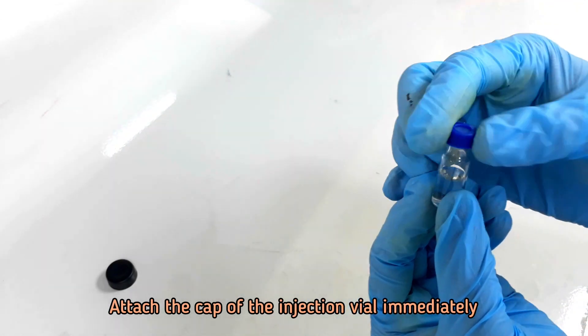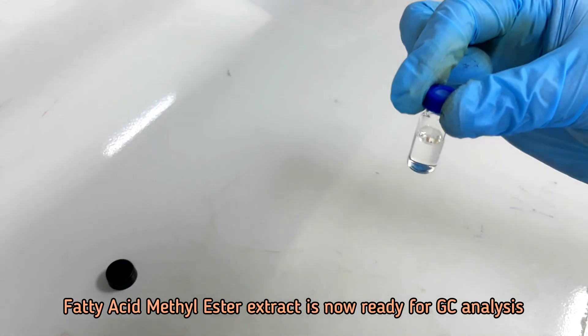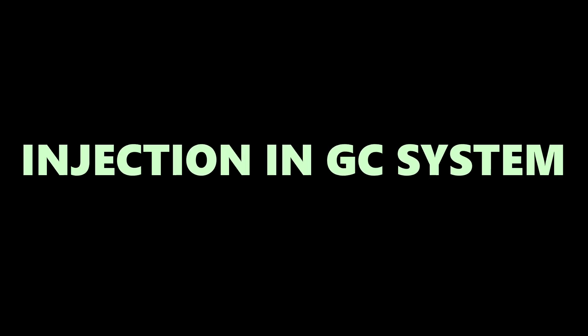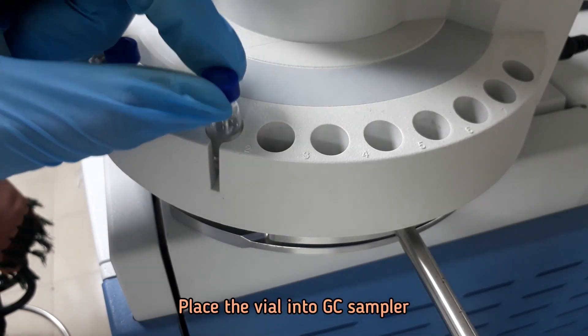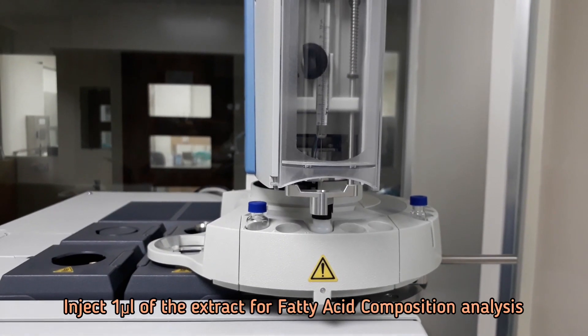Attach the cap of the injection vial immediately. Place the vial into GC sampler and inject 1 microliter of the extract in GC for fatty acid composition analysis.